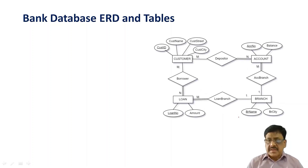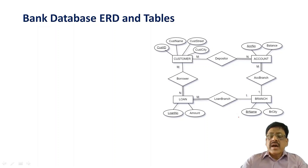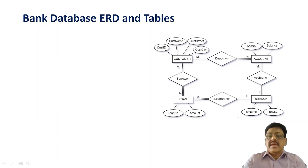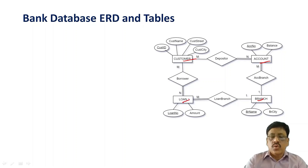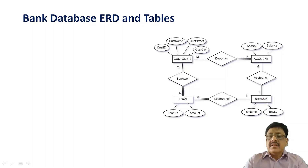Very small requirements are reflected here. We have four entity sets: customer, account, branch, and loan. These are the entity sets we look at here.